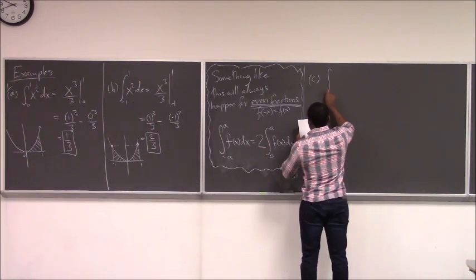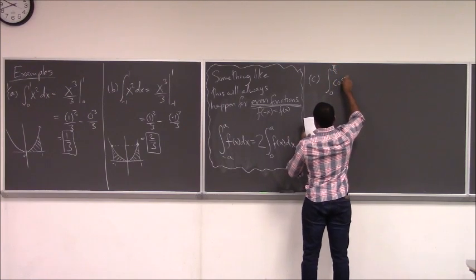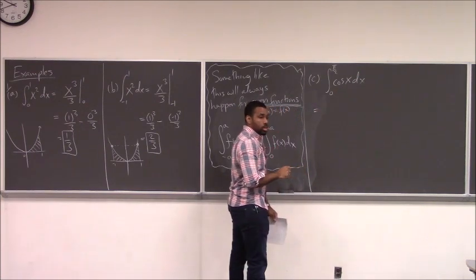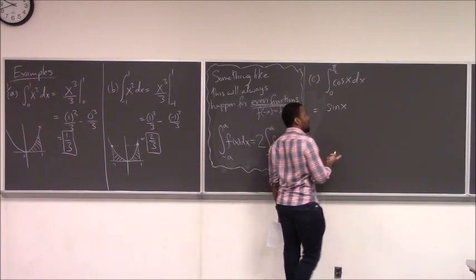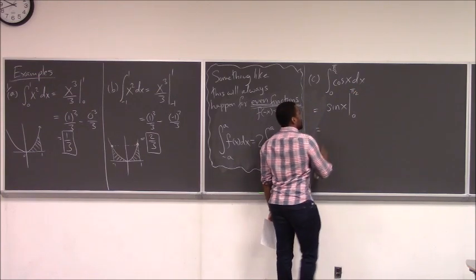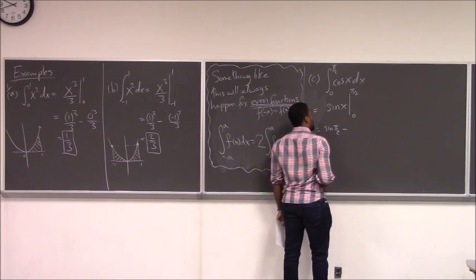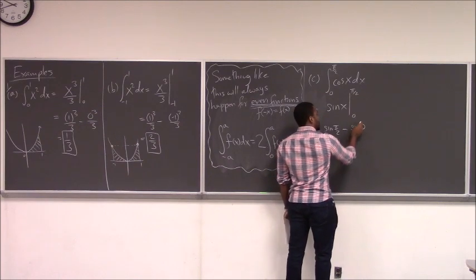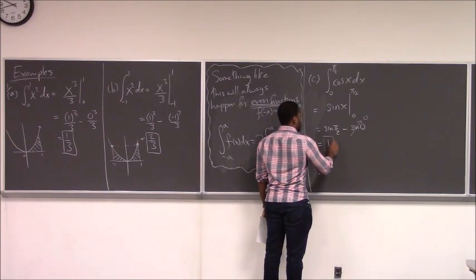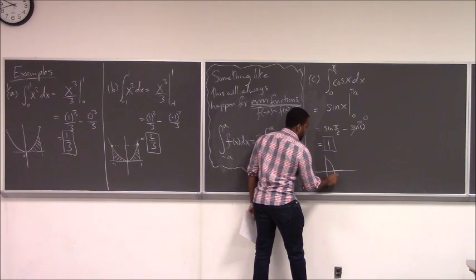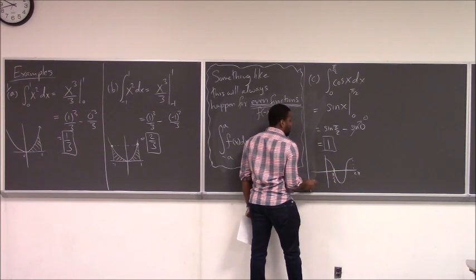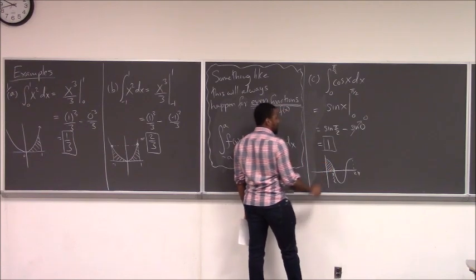For example 1C, the anti-derivative of cosine is positive sine. If I differentiate positive sine, I get positive cosine. So I write sine with the bar from zero to pi over two. Plugging in pi over two gives sine of pi over two, which is one, minus sine of zero, which is zero. So the answer is one. Geometrically, the area under the cosine curve from zero to pi over two is one.